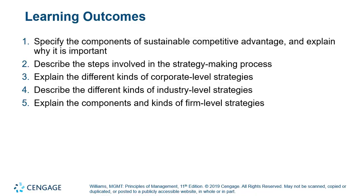Let's get going. The learning outcomes for this chapter include: components of sustainable competitive advantage and why it's important; the steps involved in strategy-making; different kinds of corporate-level strategies; different types of industry-level strategies; and the components and kinds of firm-level strategies. Please follow along with the text starting at page 112, and make sure you have read it before following these presentations. Application and understanding of concepts is really critical.